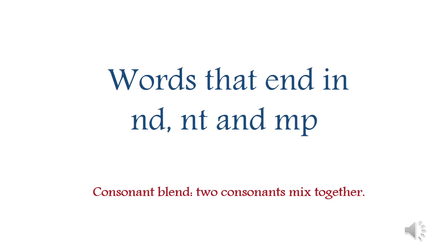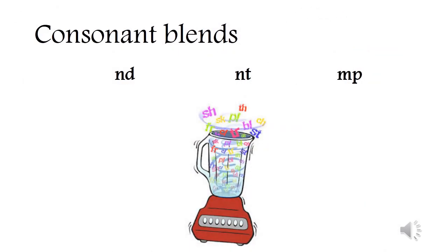Listen, my kids: when two or more consonants are put together, they keep their sounds. We call those blends. Blends can be found at the beginning of a word, in the middle, or at the end. Today we are going to learn the blends ND, NT, and MP.